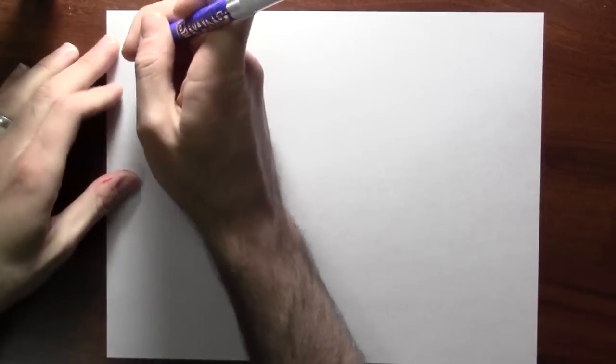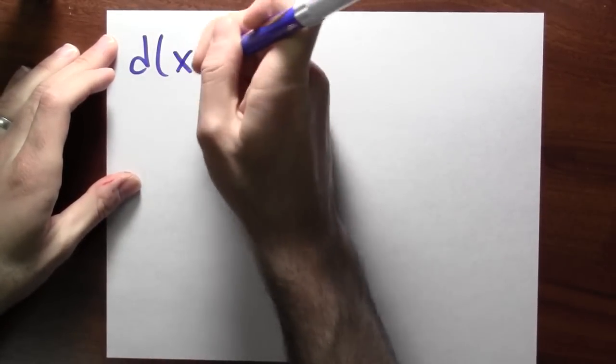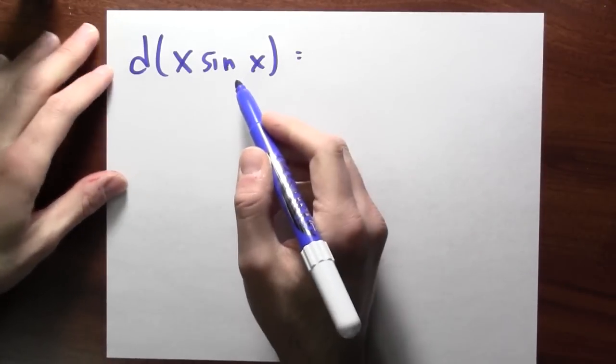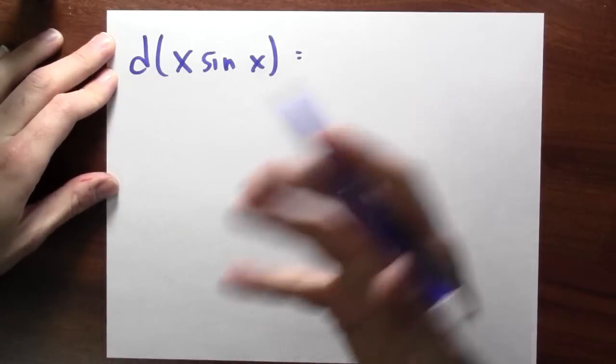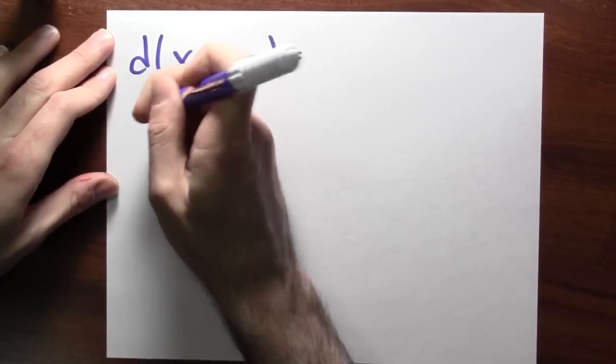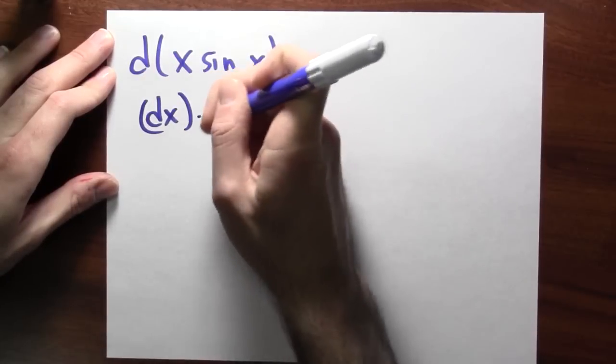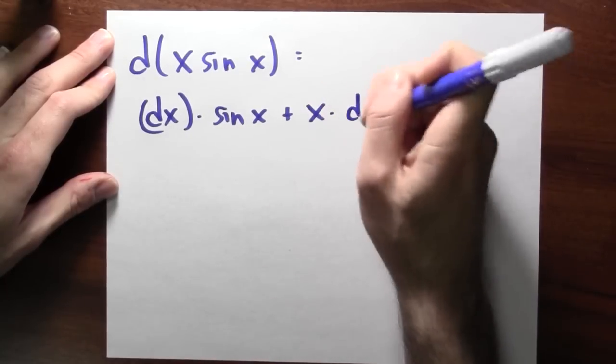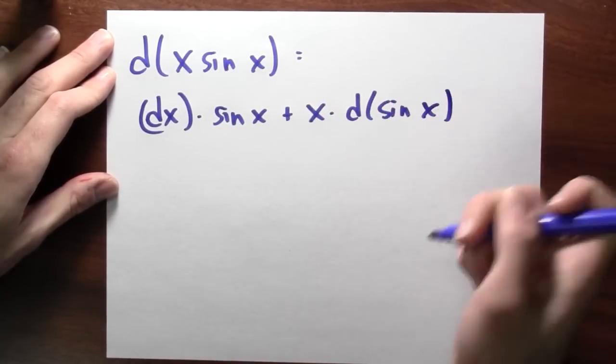We can cook up a more complicated example. For example, let's calculate d of x sine x. Well, this is d of a product and I can compute that by using the product rule for differentials. All right, what does that tell me? Well, it'll be d of the first thing times the second thing plus the first thing times d of the second thing.